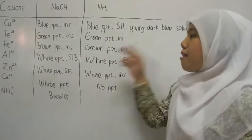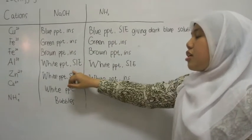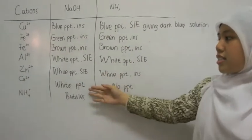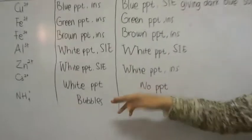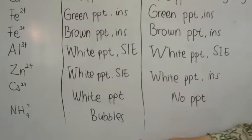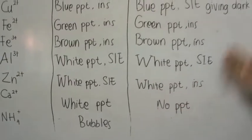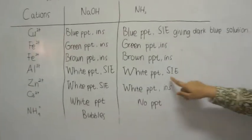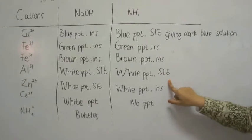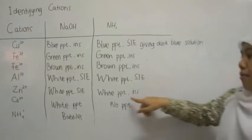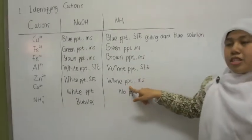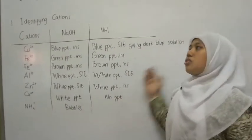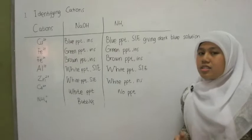I also include aluminum ions, zinc, calcium, and ammonia, and all of them are pretty much the same. SIE means soluble in excess and PPT means precipitation. So that's all about cations.